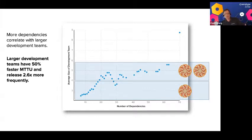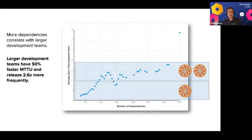Larger development teams tend to have about a 50% faster mean time to update and release about two and a half times more quickly.